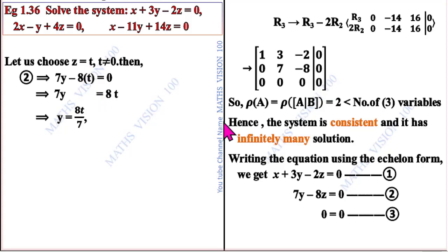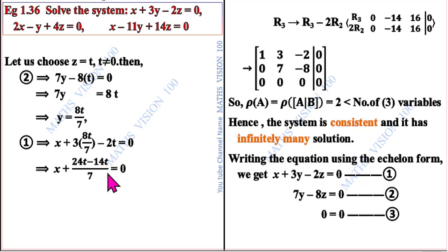From the first equation, x plus 3 times 8t/7 minus 2t equals 0. Taking LCM as 7, we get 7x plus 24t minus 14t equals 0, so x equals minus 10t divided by 7.